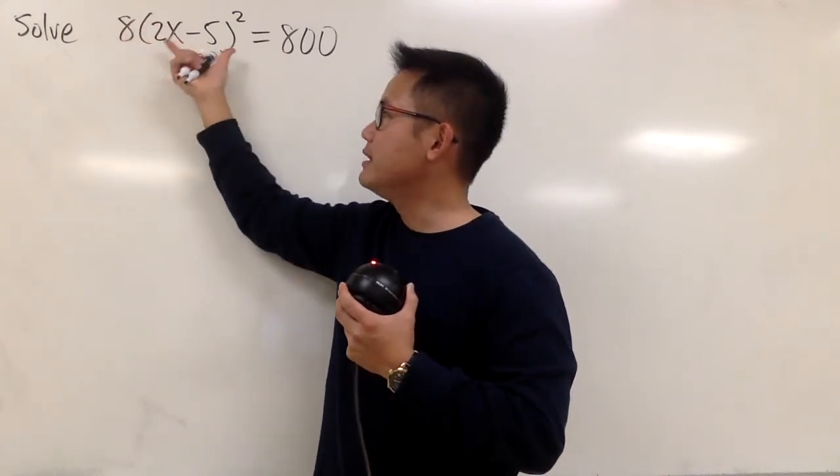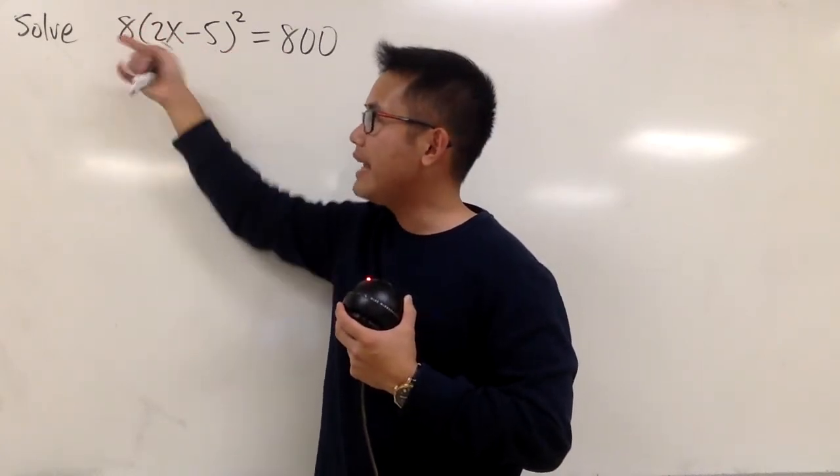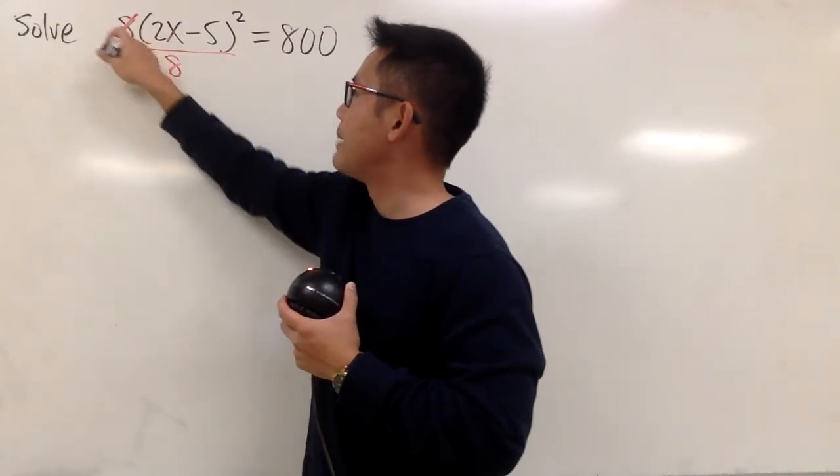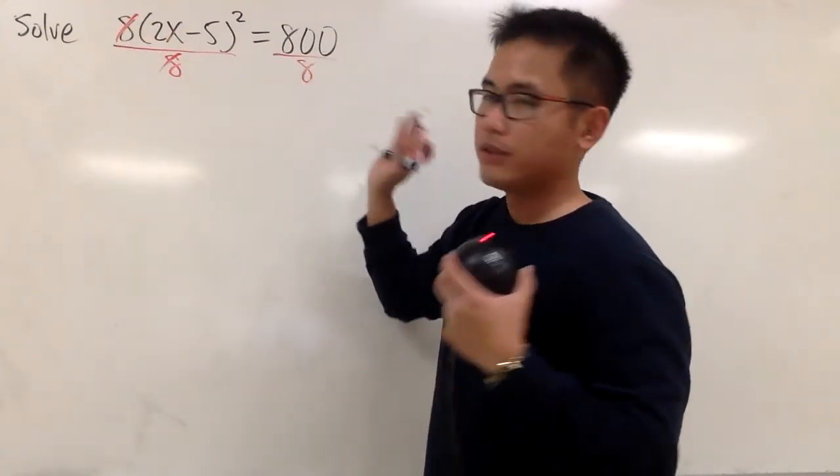This is 8 times this quantity. To get rid of this 8, we can just first divide both sides by 8. Okay, so let's do that.